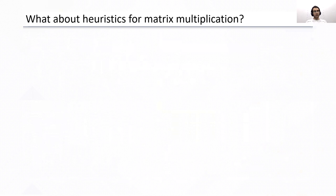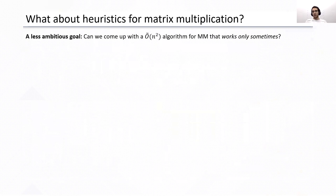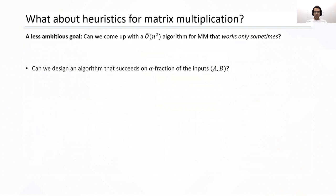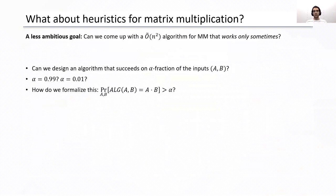The problem of computing matrix multiplication in time n squared looks to be a difficult problem, so one might ask: how about heuristics for this task? For example, is it possible to come up with an algorithm that has time close to n squared but only outputs the correct answer with some probability? We can ask whether it's possible to design an algorithm that succeeds only on maybe 99% of the inputs, or maybe even 1% of the possible inputs. But before that, we have to define what we mean by 1% of the inputs. To make it more formal, we consider matrices in a prime field F.